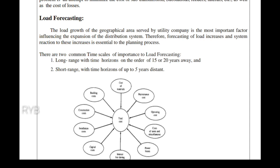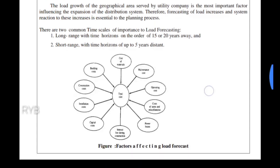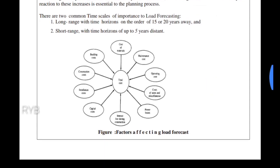There are two main load forecasting methods: long range and short range. Long range considers a load study period of 15 to 20 years. Short range means within a span of less than five years — that is short-range load forecasting.